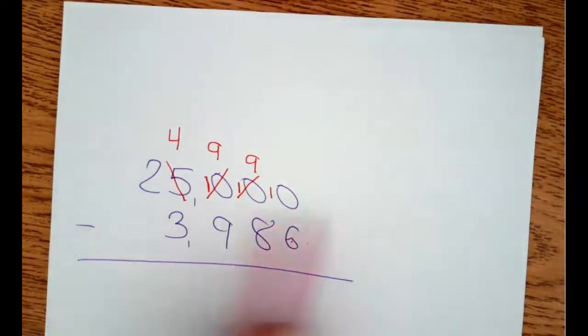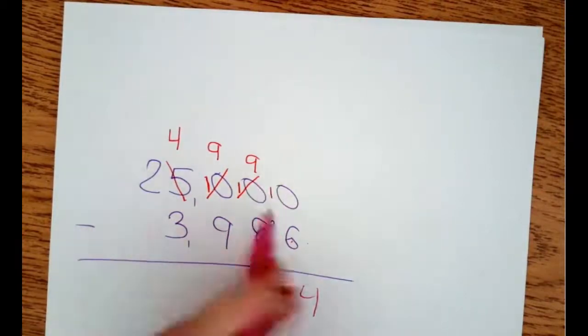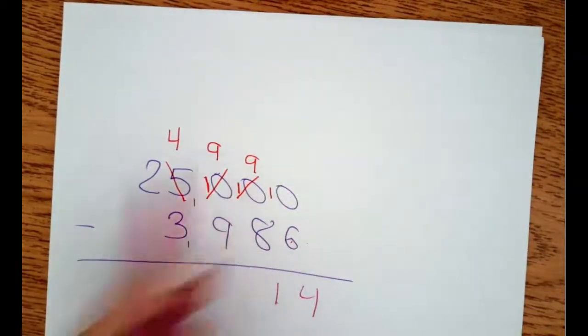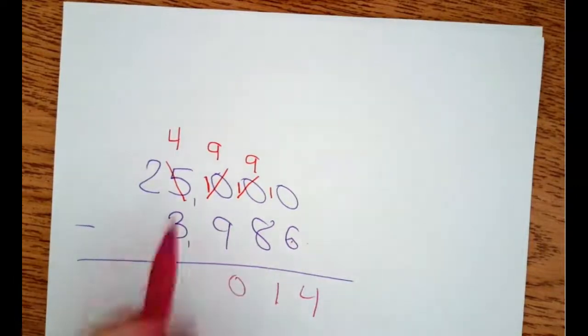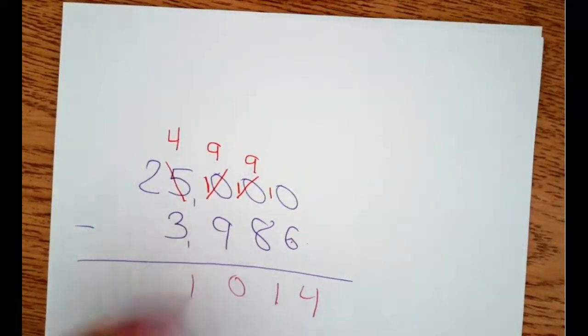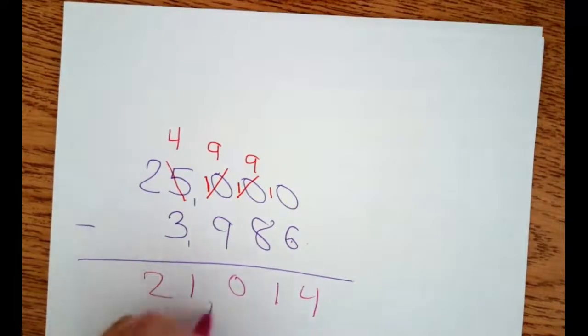And then it's just strictly subtracting. Ten minus six is four. Nine minus eight is one. Nine minus nine is zero. Four minus three is one. And then two minus nothing.